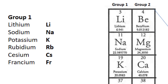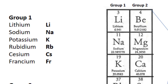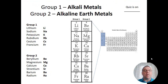Below potassium we have rubidium, Rb, followed by cesium, Cs, and francium — like the country — Fr. Now the alkali metals as a family have a pretty unique set of properties, so let's take a quick look at a clip demonstrating the properties comparatively of lithium, sodium, and potassium.